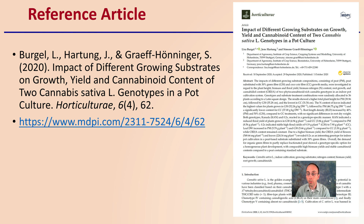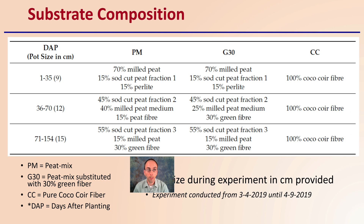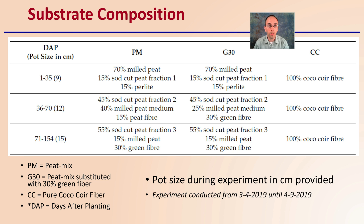So as always, here is the article, here's the citation, here's the first page, here's the link to it, where you can always find more details of the experiment. This can provide you with the highlights here. So first off, the substrate composition — what are the different substrates that were looked at in this study? You're going to see terms like PM, G30, and CC.